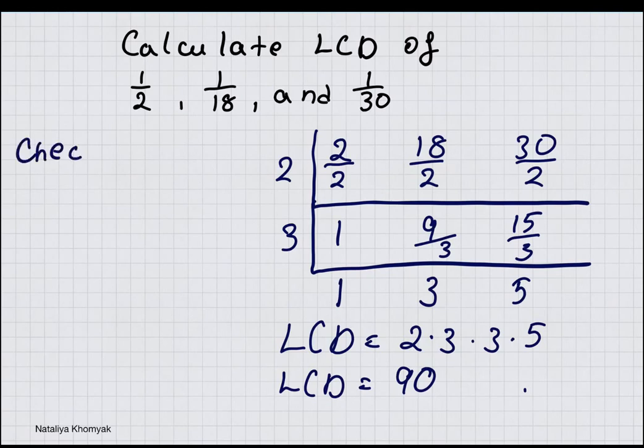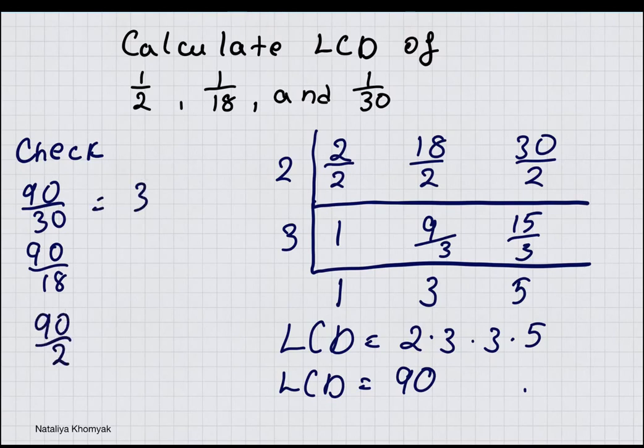To check we have 90 divided by 30, 90 divided by 18 and 90 divided by 2. So we have 3, 5 and 45.